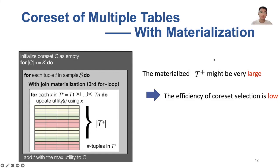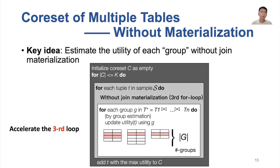Now, let's come to coreset of multiple tables, which is the scenario in feature-rich machine learning. As we have mentioned, a natural solution is to first do feature augmentation by executing the joins, and then use the above coreset selection on the materialized result. However, since the materialized view might be very large, the efficiency of coreset selection is low. To solve this problem, our key idea is to estimate the utility of each group without join materialization. Here, a group refers to a set of tuples in the join results that have the same attribute values on a predefined set of attributes. Conceptually, the utility can be estimated by first computing the feature similarity of tuples in each individual table, and then aggregating them using a dynamic programming algorithm without join materialization. By doing so, we can significantly reduce the computation in the third for loop, thus improving the overall efficiency.